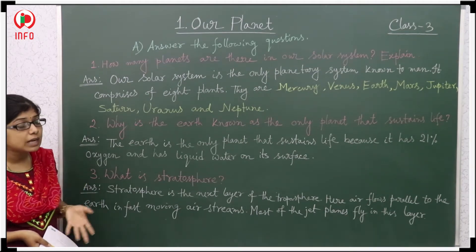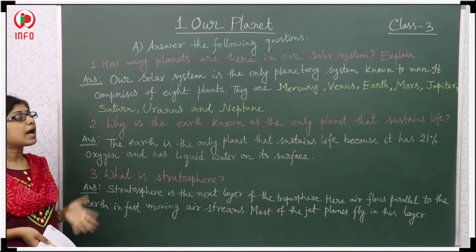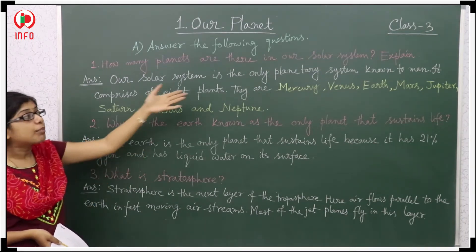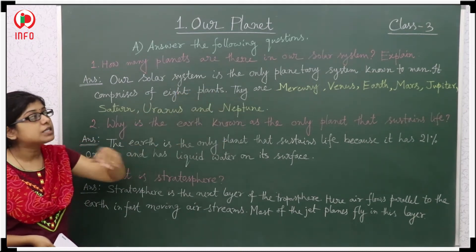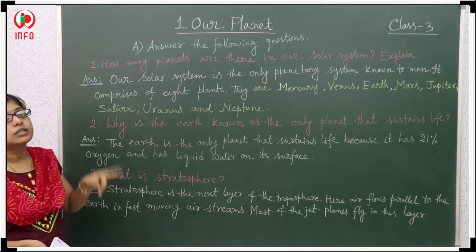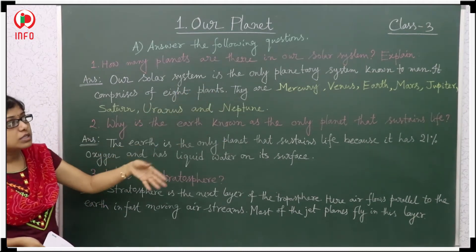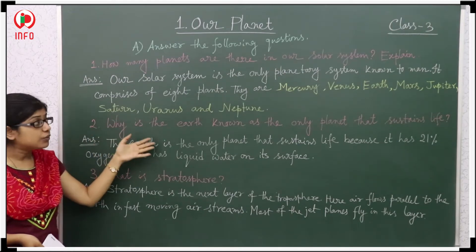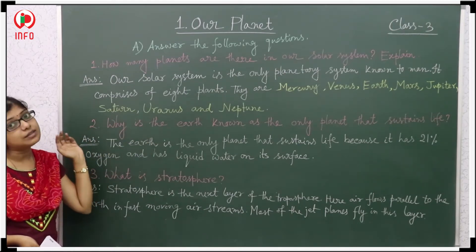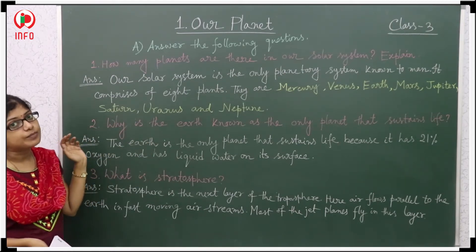The names of the 8 planets are Mercury, Venus, Earth, Mars, Jupiter, Saturn, Uranus, and Neptune.